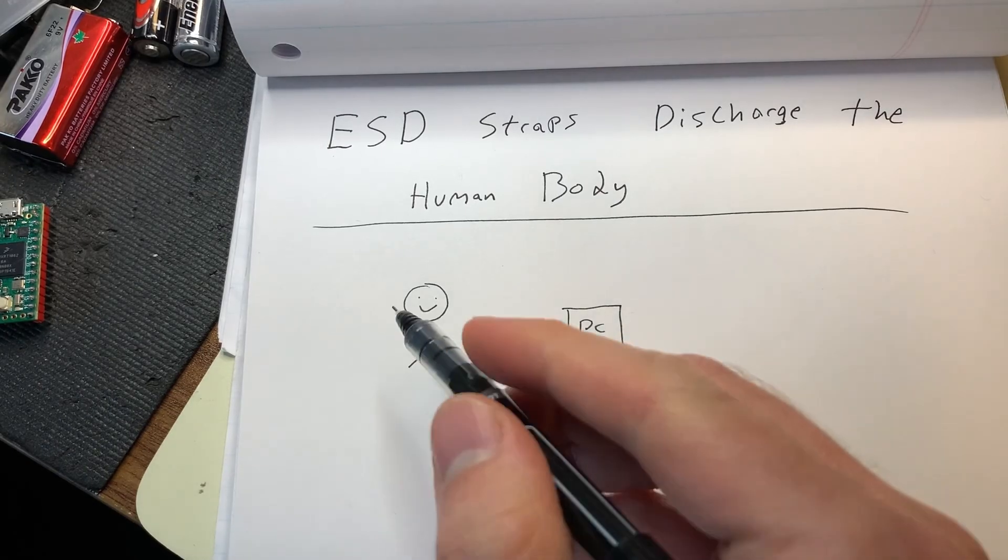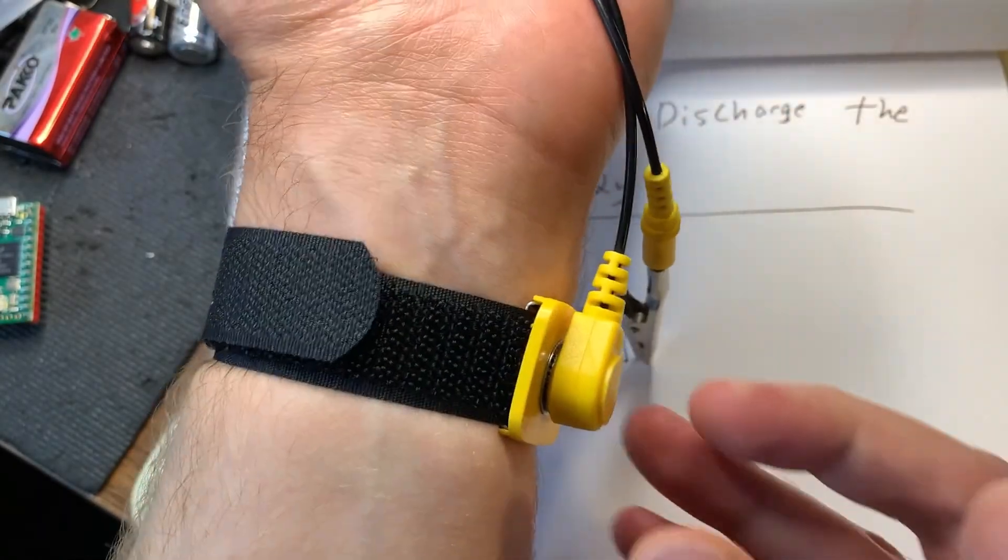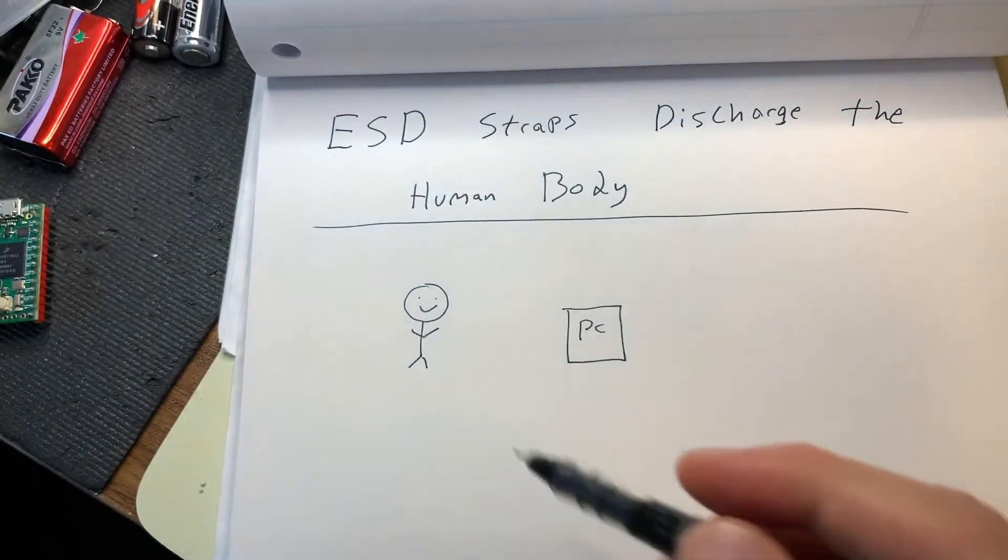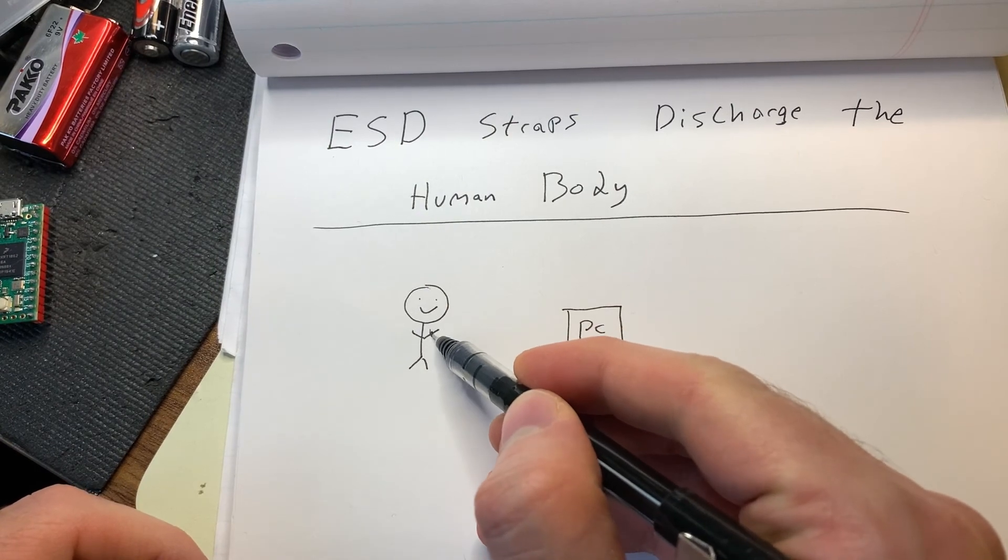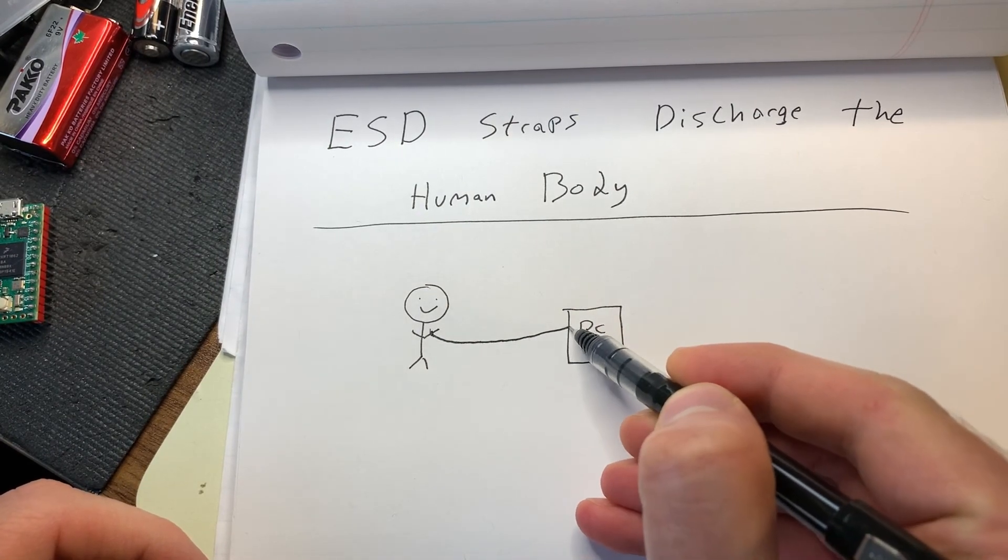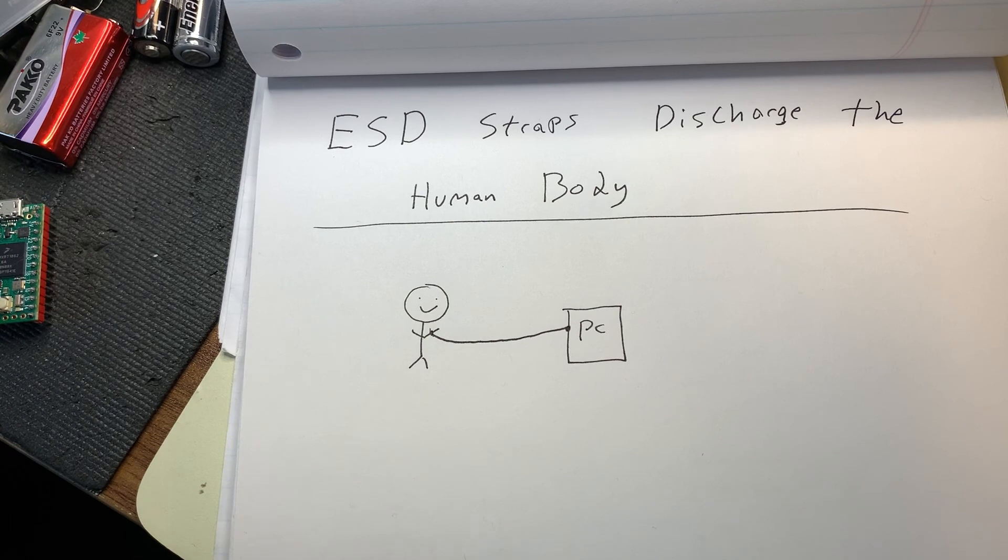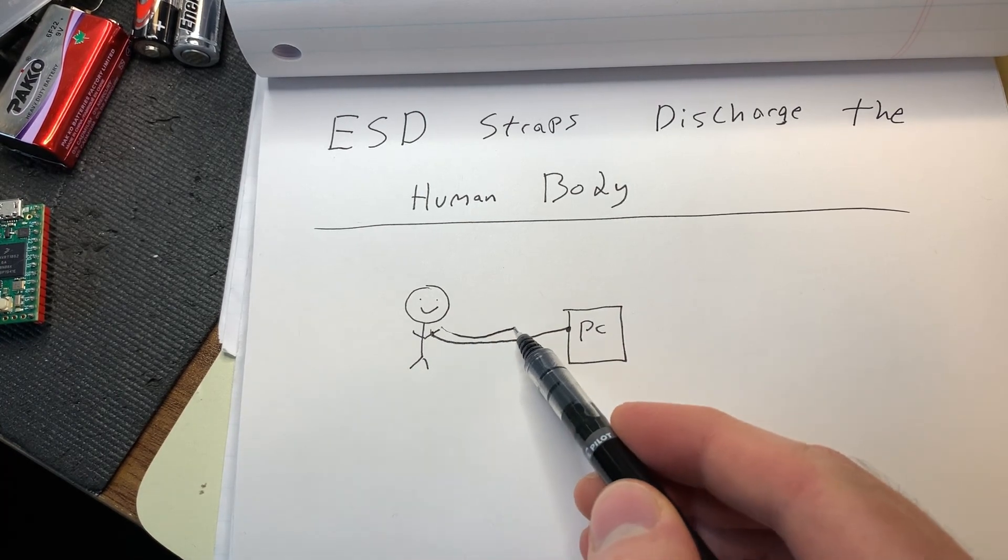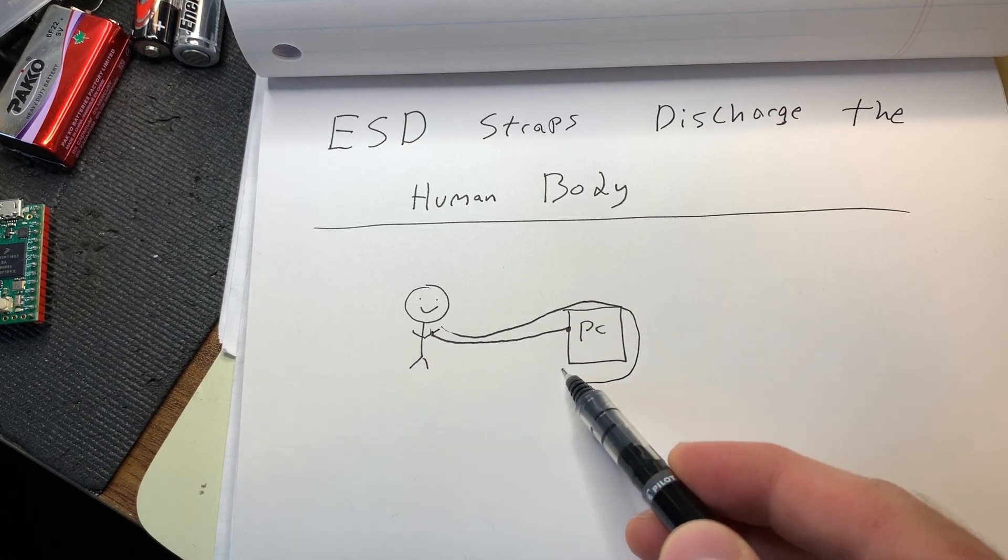In its most simple form, it's taking the wrist strap, attaching it to your wrist with the electrode in contact with the skin, and then attaching it to generally the metal case of whatever you're working on.